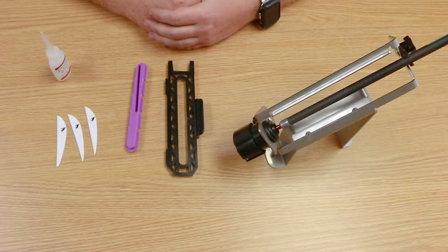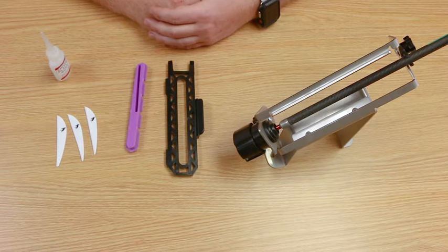Today we are going to put some 3 inch bronco vanes on with a 3 degree left helical.